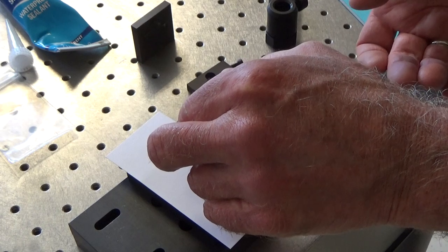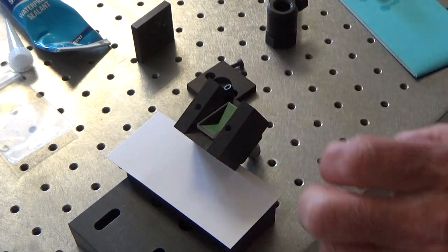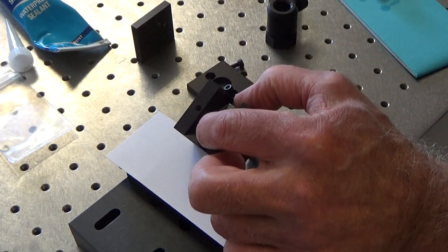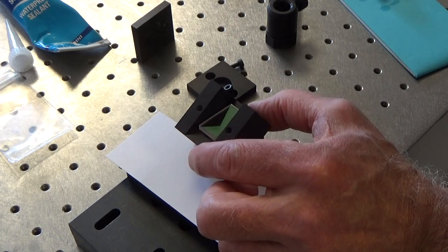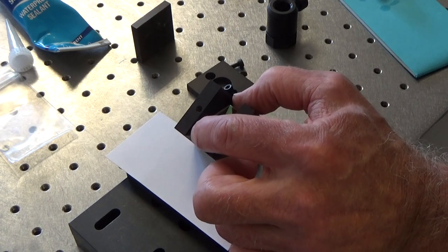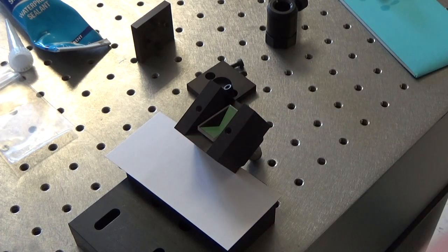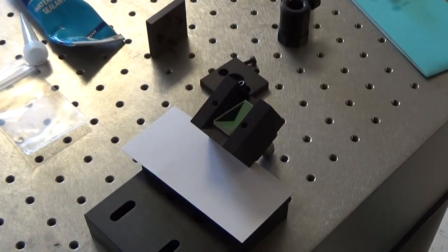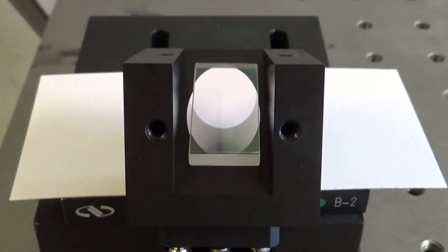And then position it so that it is filling the circular aperture. I'll just show you with the white card behind it.